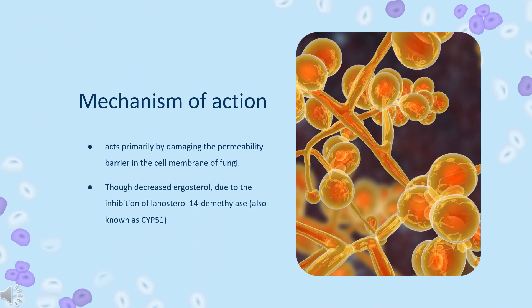Mechanism of Action: Clotrimazole acts primarily by damaging the permeability barrier in the cell membrane of fungi. It causes inhibition of ergosterol biosynthesis, an essential constituent of fungal cell membranes. If ergosterol synthesis is completely or partially inhibited, the cell is no longer able to construct an intact and functional cell membrane. Because ergosterol directly promotes the growth of fungal cells in a hormone-like fashion, this leads to dose-dependent inhibition of fungal growth through inhibition of lanosterol-14-DMase, also known as CYP51.